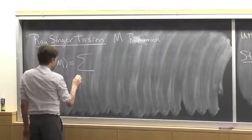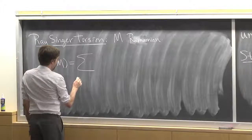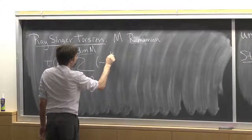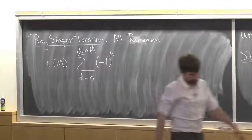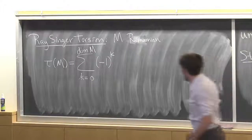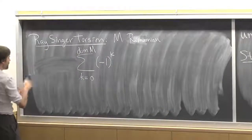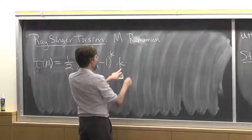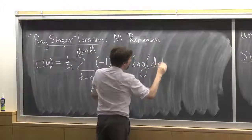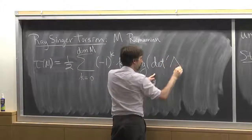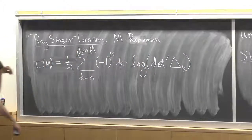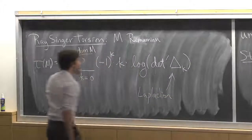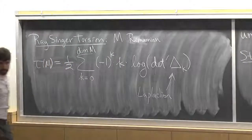The Ray–Singer torsion is a number you associate to a Riemannian manifold of any dimension. It has to do with the spectra of the Laplace operator on differential forms of varying degrees. You sum K from 0 up to the dimension of M — there's a sign factor and a normalization constant — and take the log of the determinant-prime of Δ_K, where Δ_K is the Laplacian on K-forms. The determinant-prime is the product of the non-zero eigenvalues, since the kernel of the Laplacian is the harmonic forms. In infinite dimensions you write down a zeta function and analytically continue.